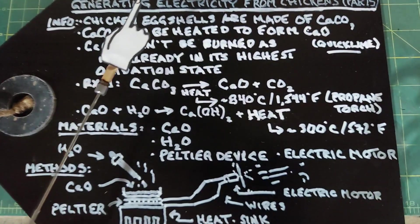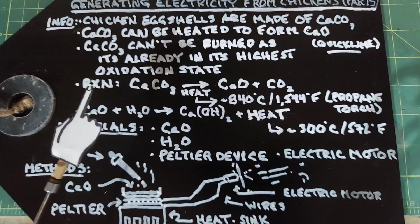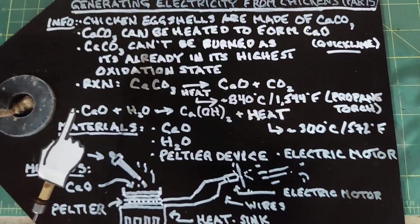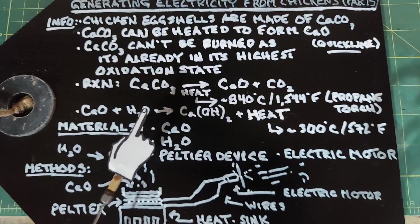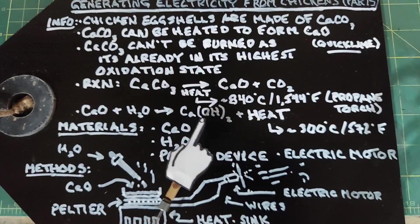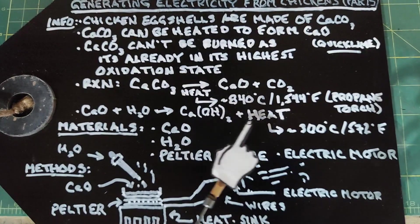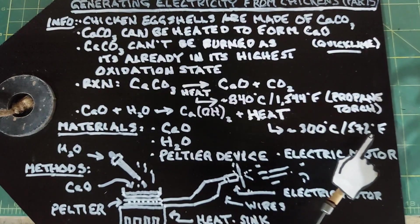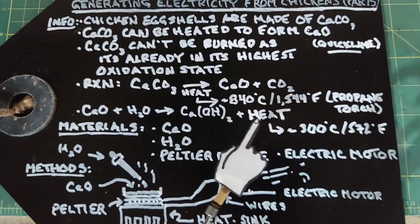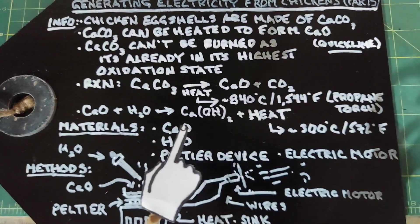The way we're going to get electricity from chicken eggshells is we're going to take the calcium oxide, and when you add water to it, you get calcium hydroxide, but it's very exothermic and produces a lot of heat, about 300 degrees Celsius or 572 degrees Fahrenheit. The heat being generated here is what we're going to use to generate electricity.